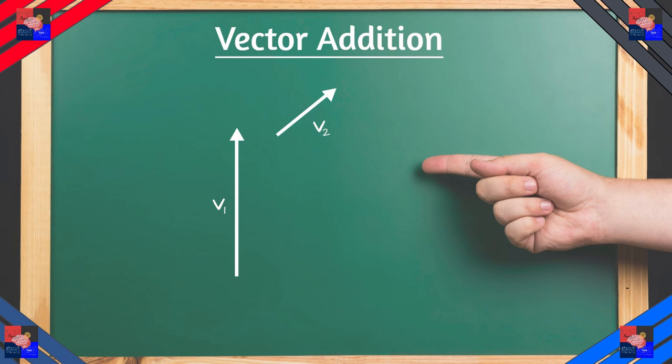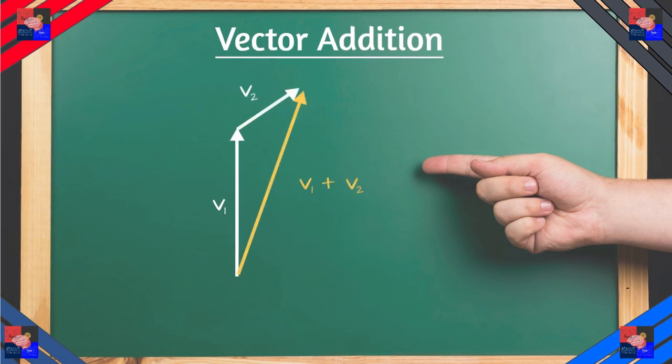So we have V1 and V2 here. V1 is the first vector, V2 is the second vector. What we do here is, at the end of the first vector, we just put on the second vector and we create a sort of hypotenuse. This hypotenuse is the resultant vector.